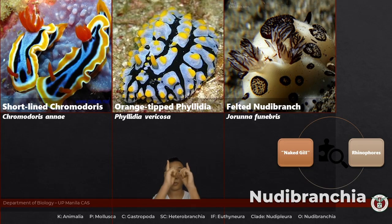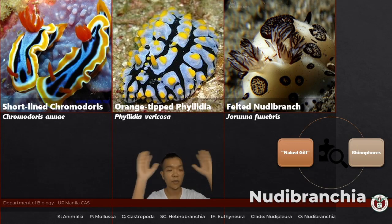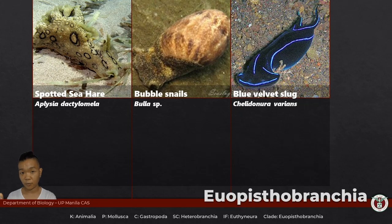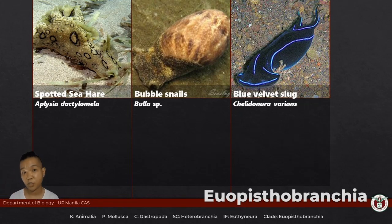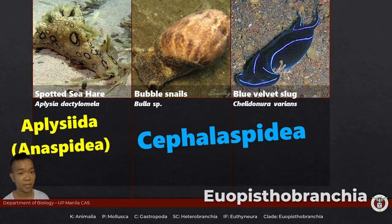The representative you have would be Felidia at the center, but nudibranchs are so cute, awesome, and interesting — some of the most photographed marine gastropods out there. You Opisthobranchia — all the other opistobranchs except for the nudibranchs — they have a shell, but it's internalized or highly reduced. The representatives for your lab would be Aplysiida, which is formerly Anaspidea, and then you also have Cephalaspidea. Cephala means head, aspida means shield.